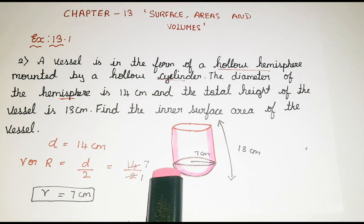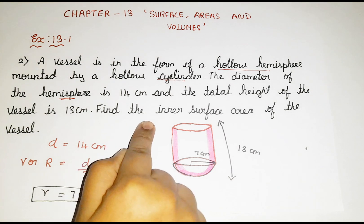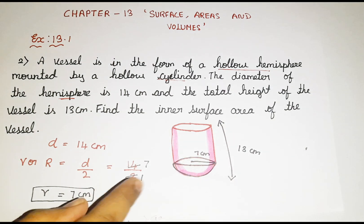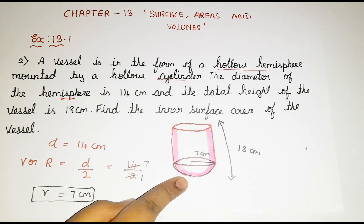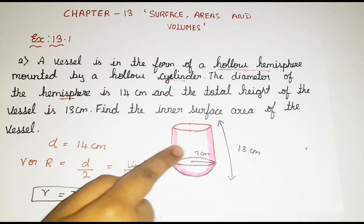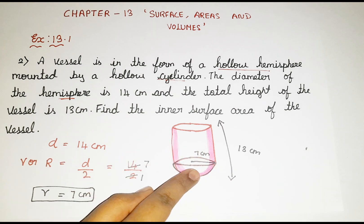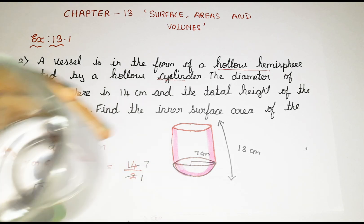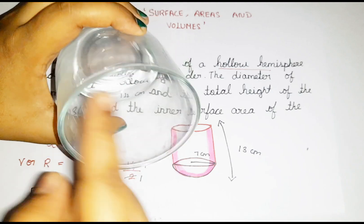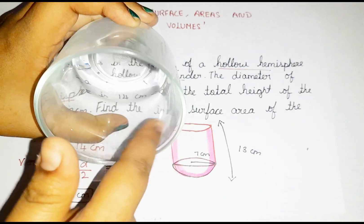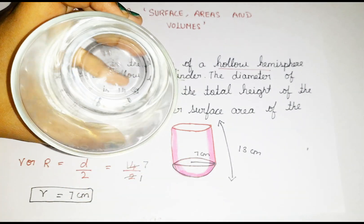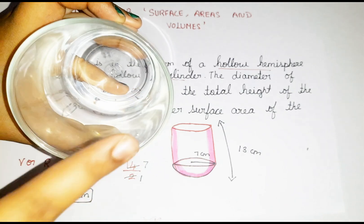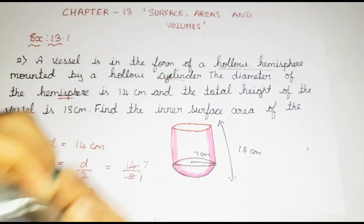Now I hope you guys know why I took curved surface area. Now I am going to write: Inner surface area equals curved surface area of cylinder plus curved surface area of hemisphere. I am able to paint only the curved surface of the cylinder as well as the curved surface of the hemisphere, so I am going to use that formula.